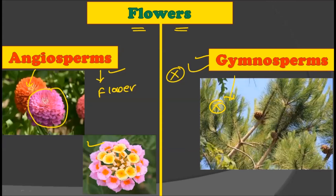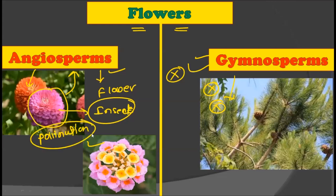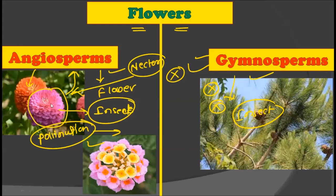Having flowers provides many evolutionary advantages. Attractive flowers attract insects for pollination, and due to insect pollination there is a maximum chance that pollination will occur. This advantage is lacking in gymnosperms because they do not contain any kind of flower, insects rarely visit them since insects are only interested in nectar which is present in flowers. Insects land on beautiful flowers to take nectar and in this process indirectly pollinate the flower, making angiospermic plants more successful over gymnospermic plants.